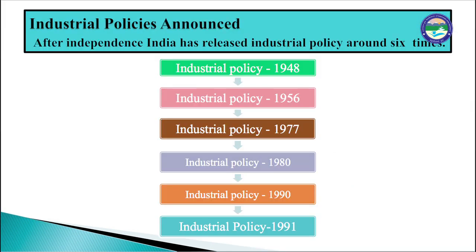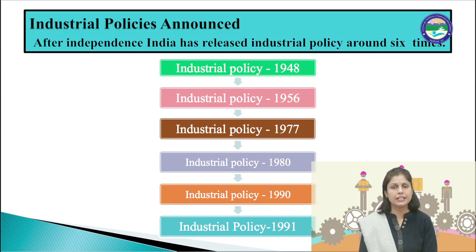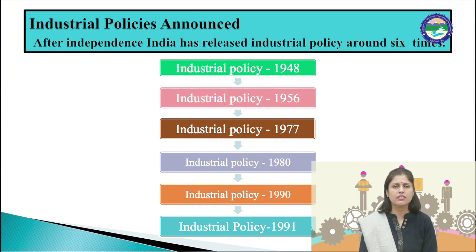After independence, India has released industrial policies around six times. These are industrial policy 1948, industrial policy 1956, industrial policy 1977, industrial policy 1980, industrial policy 1990, and industrial policy 1991. Among these, the policies of 1948, 1956, and 1991 were very important, whereas the industrial policies of 1977, 1980, and 1990 were further extensions of previous policies. We will discuss each of these policies one by one.